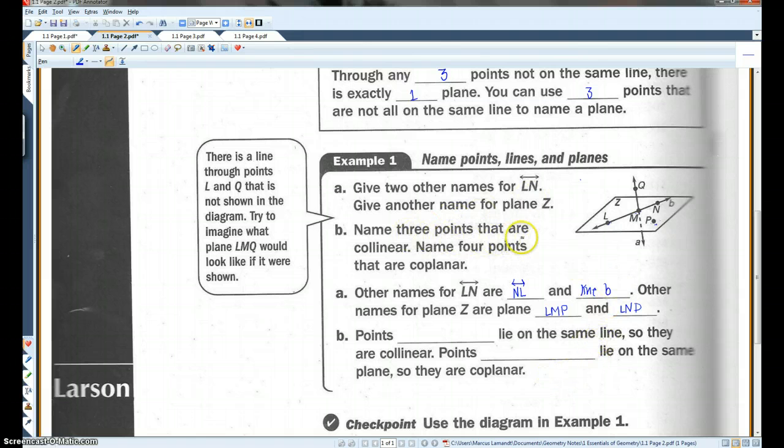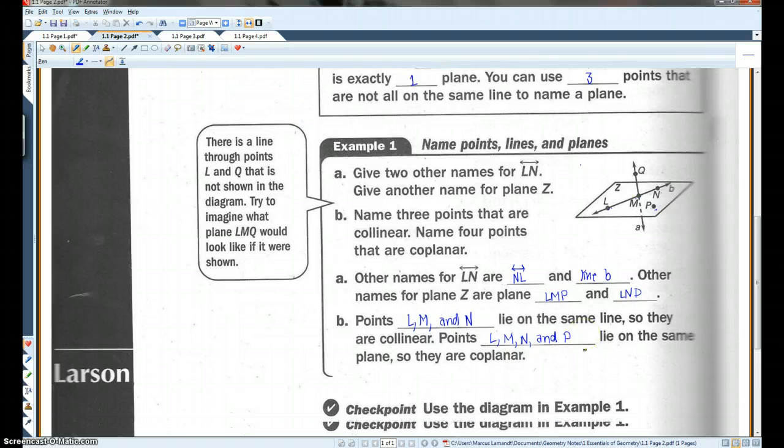All right. Part B. Name three points that are collinear. Name four points that are coplanar. Collinear means it makes a straight line. L, M, N, make a straight line. Okay. So they are collinear. L, M, N, and P are all in the same plane, so that would make them coplanar. Okay. So that would make them coplanar.